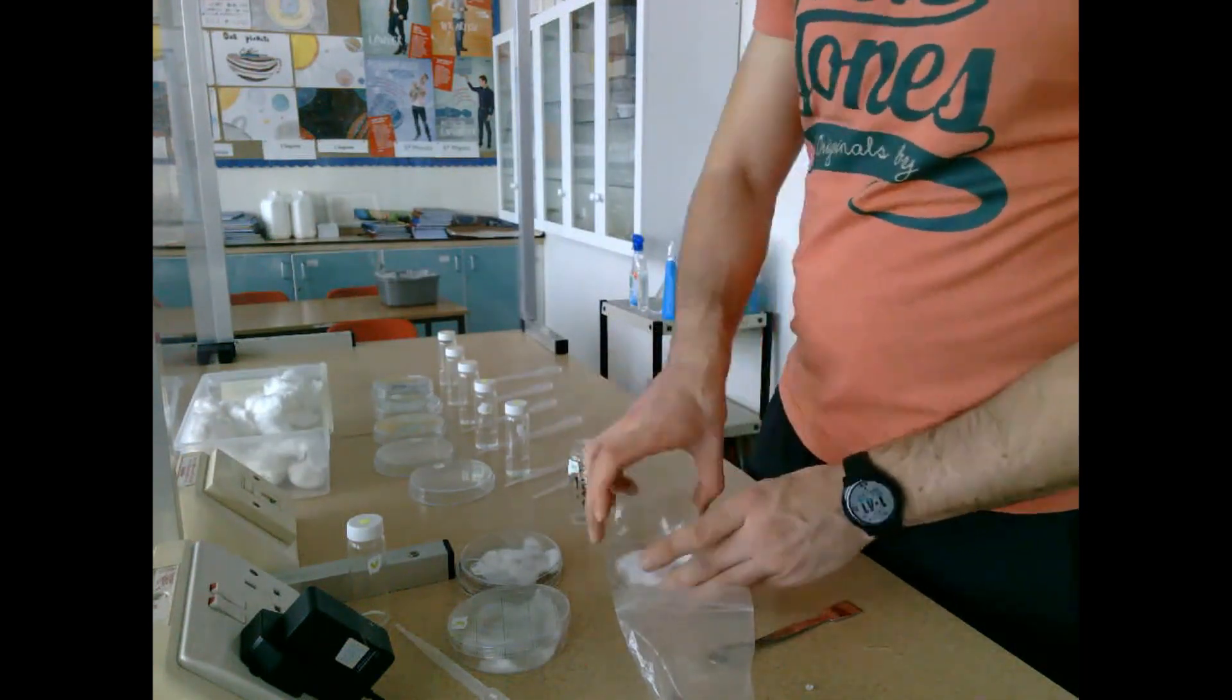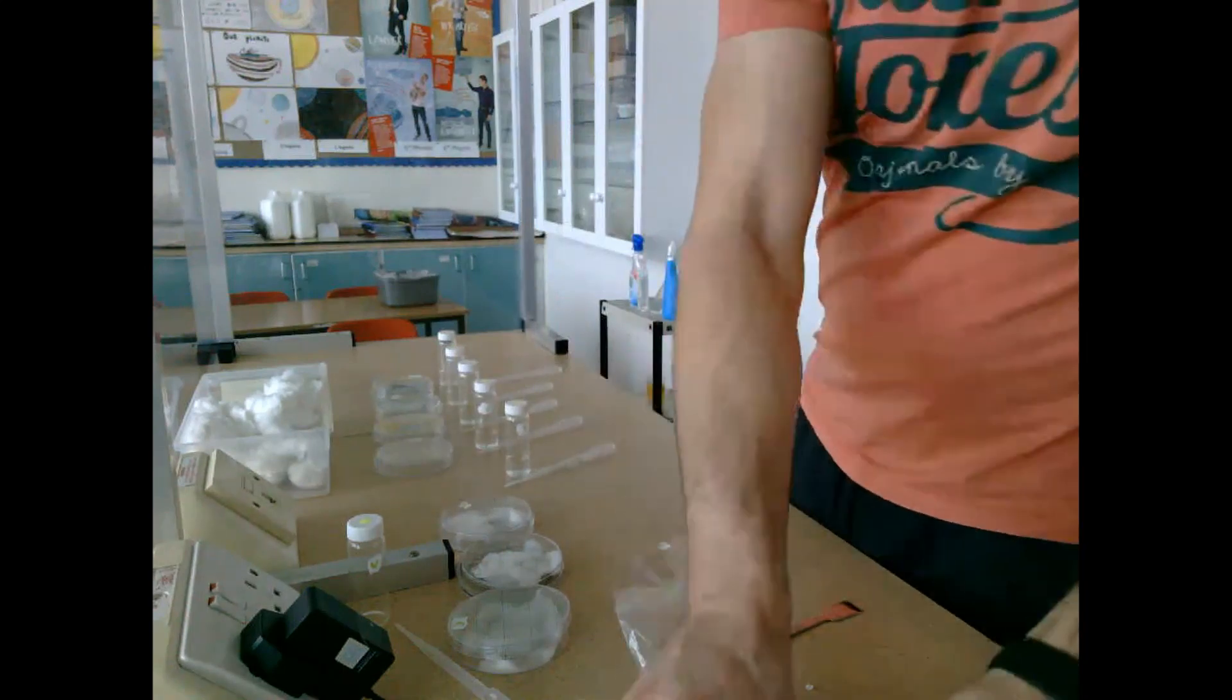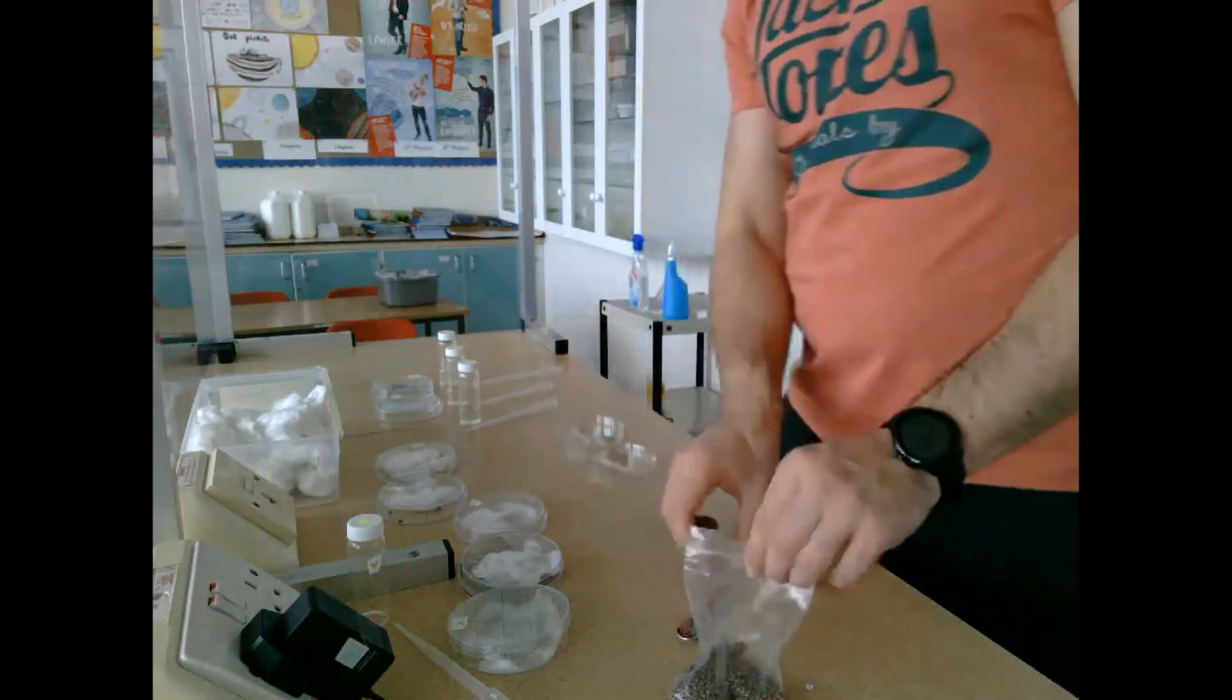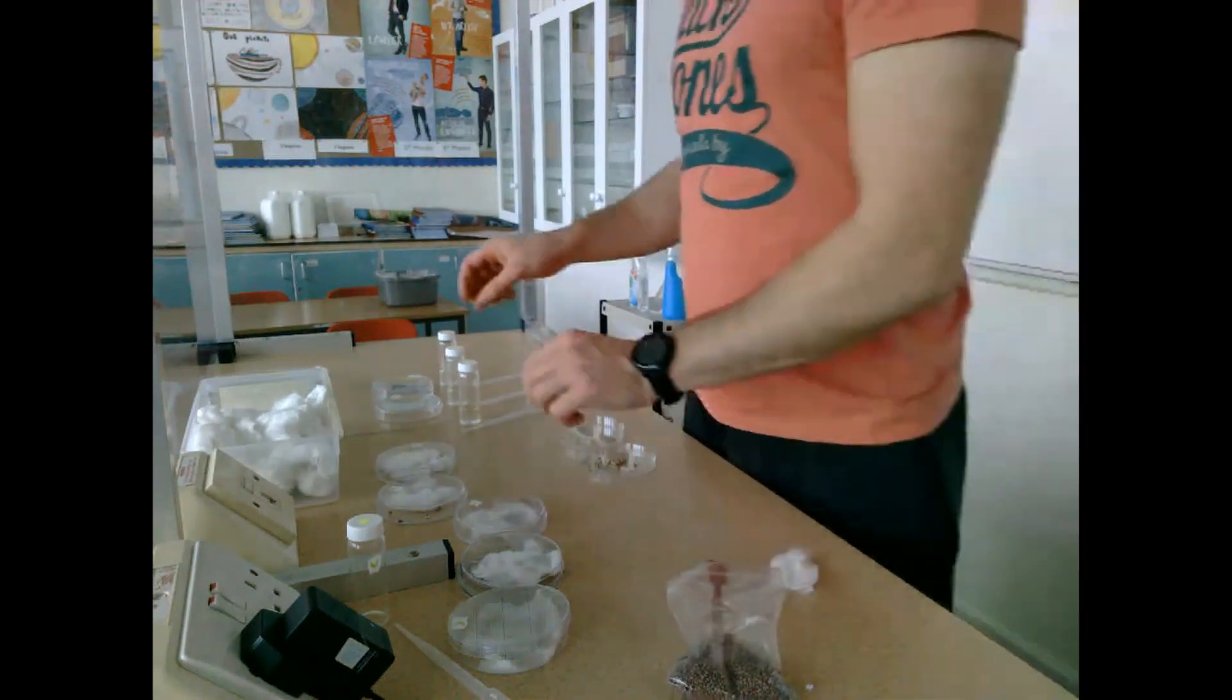I'm going to take these petri dishes and place them into an incubator for between three to five days at about 25 degrees, and then I'll be able to get the results at the end of this process.